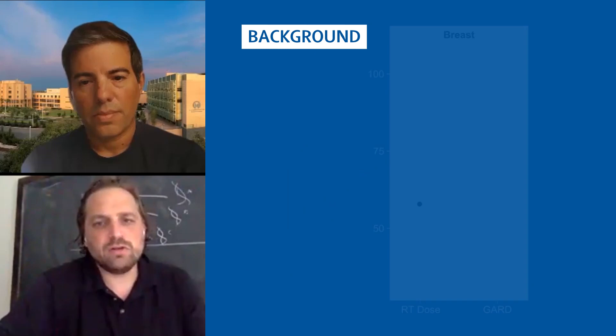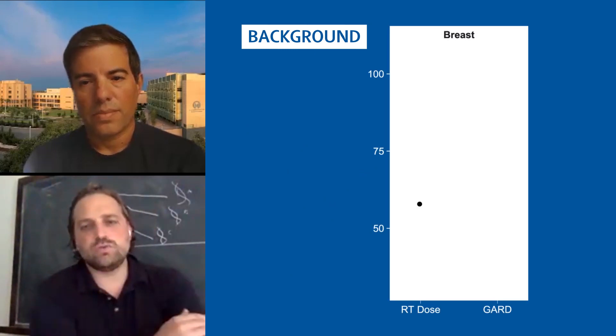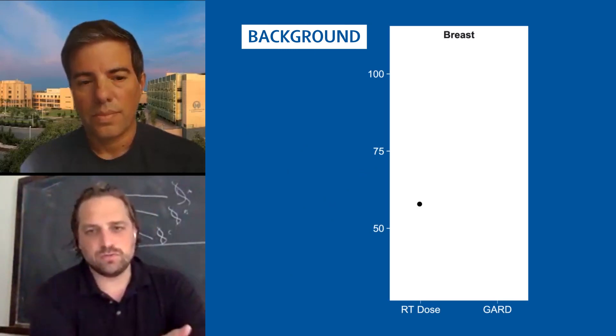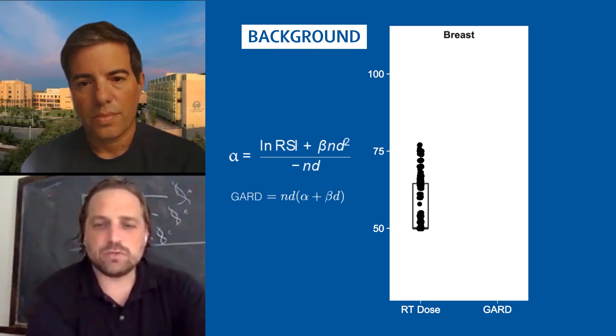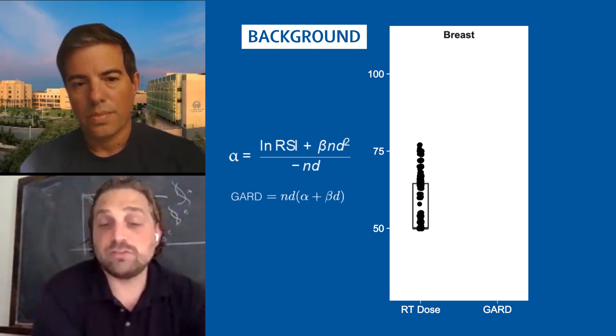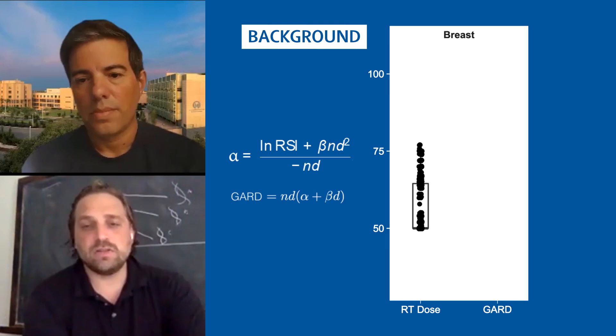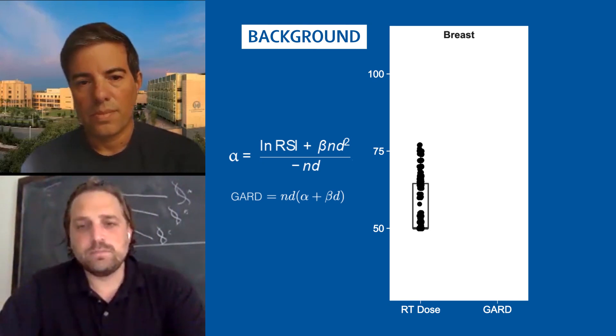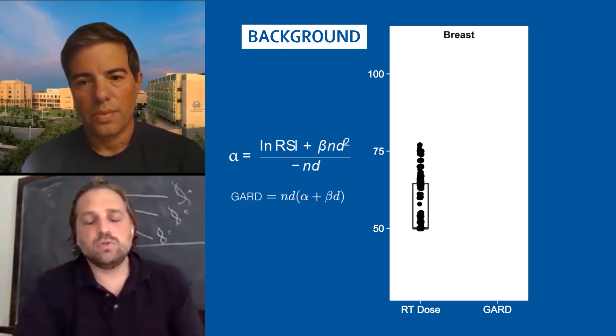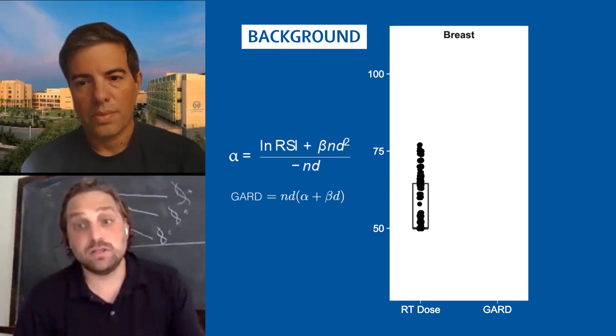And so what we've done is presented a concept of taking the individual doses patients receive. So in this case, I'm showing you a distribution of doses patients receive for breast cancer. And through a mathematical transformation using a genomic classifier called the radiation sensitivity index, we can calculate something called the genomic-adjusted radiation dose. And so going from the distribution of doses you see here, using the genomics actually reveals a wide heterogeneity of predicted biological effect of those doses.